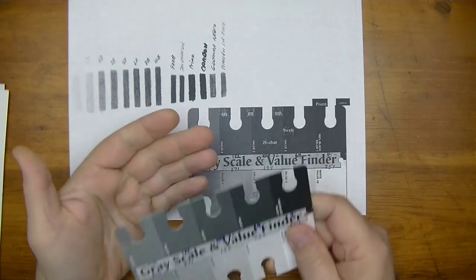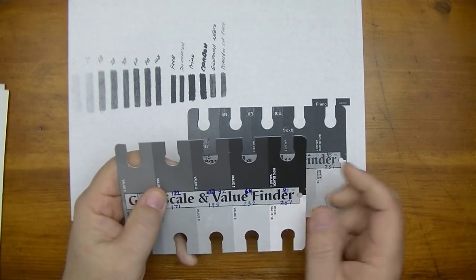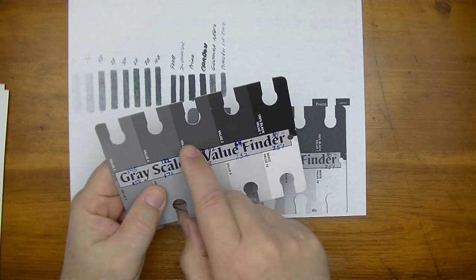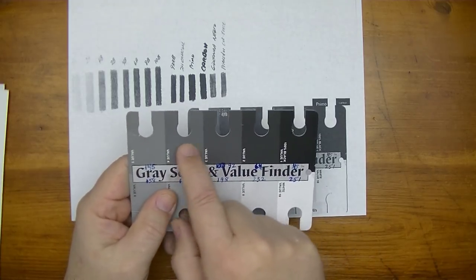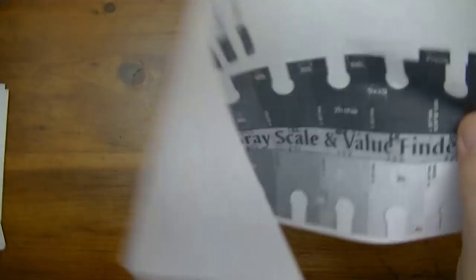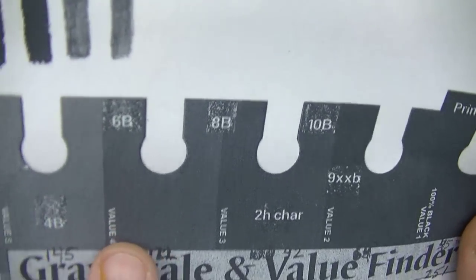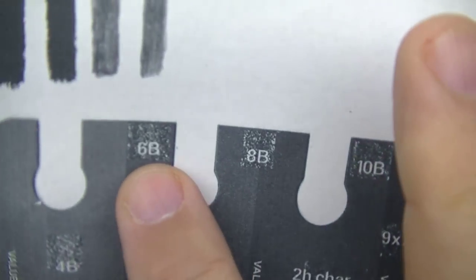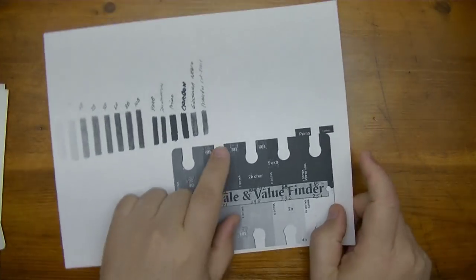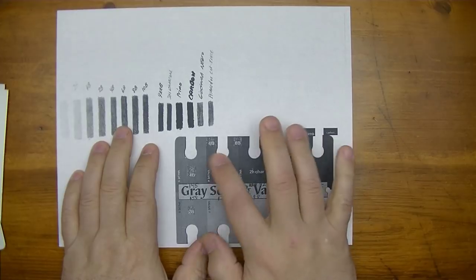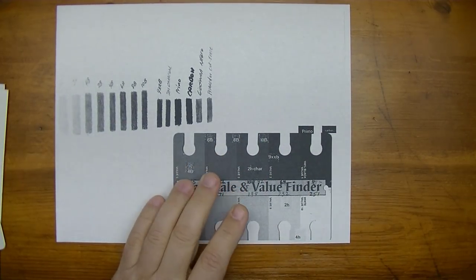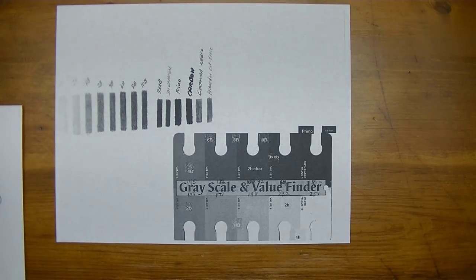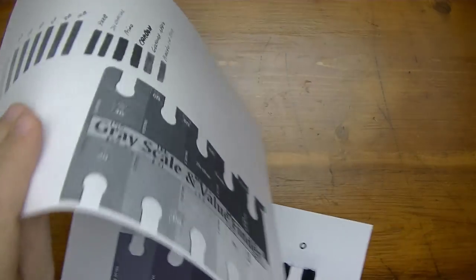So this is kind of a quick reference for me that if I was to use my value finder on the reference photo and I've determined that an area is, for example, value 4. Well, I can quickly just look at my little reference sheet here, value 4, and say, well, maybe I should start using my 6B pencil to get that tone on my drawing. And so that's what I've done with that, and I find that to be really a nice reference to have.